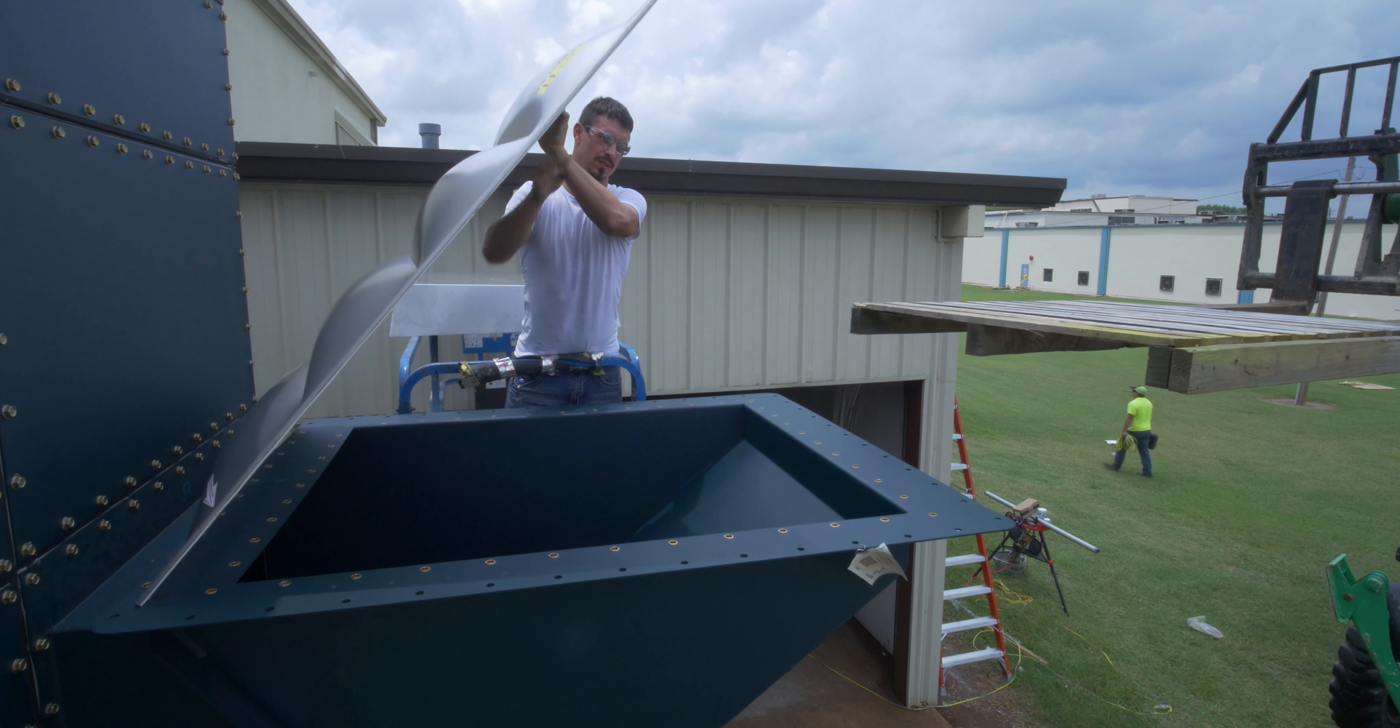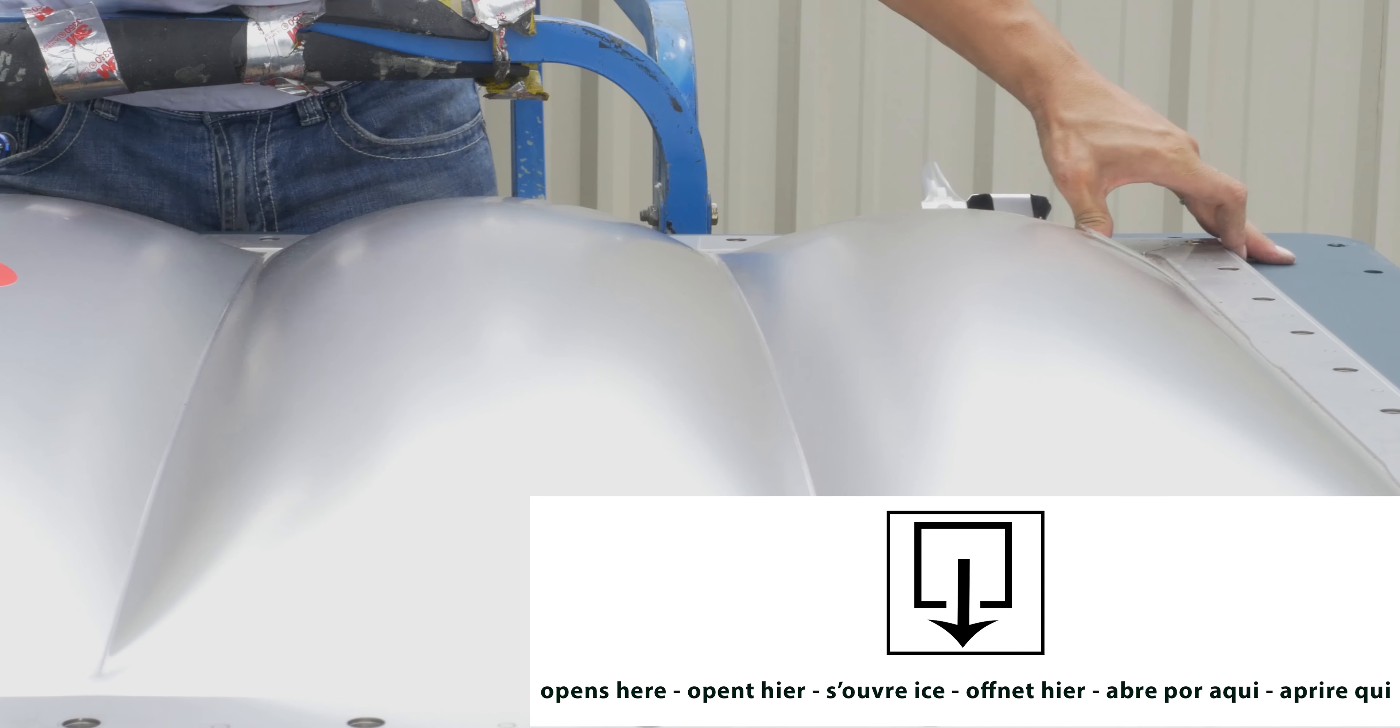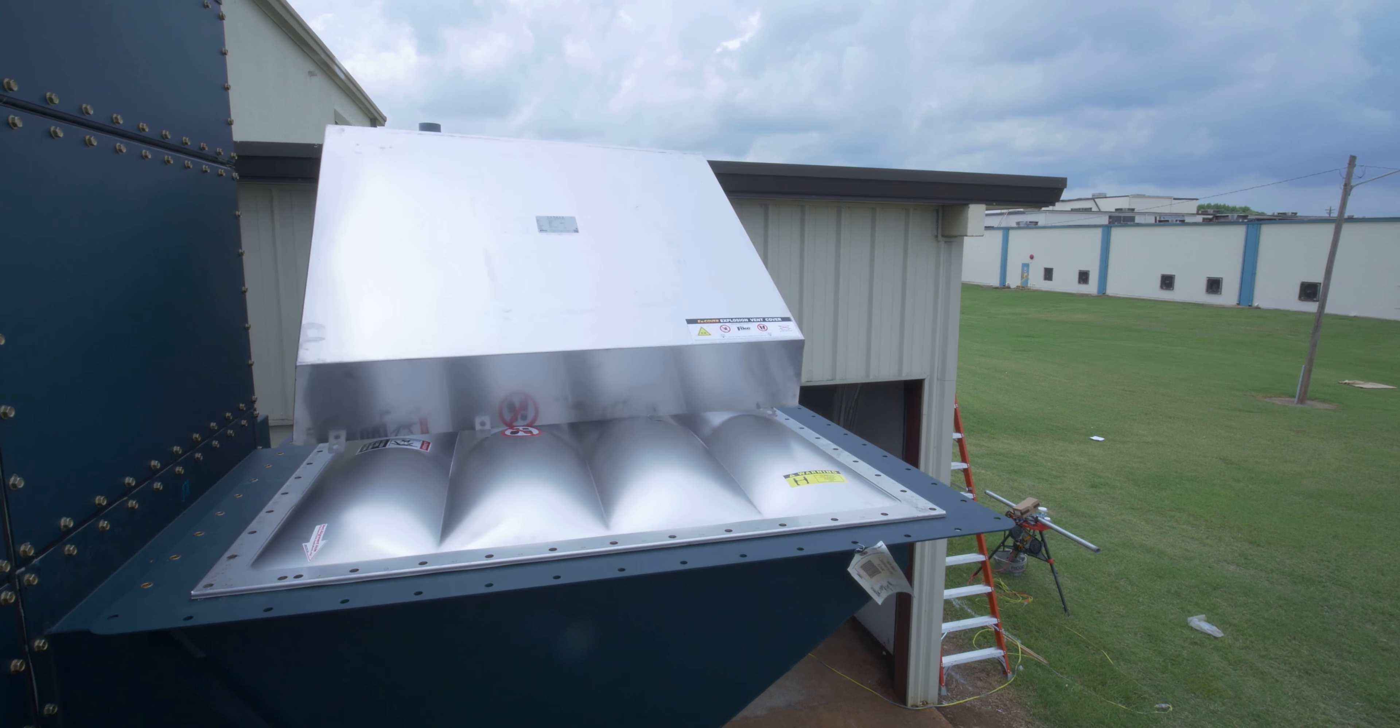For proper orientation, reference the label located on the X-VENT notating the opening side. Now, lift and place the X-Cover on top of the X-VENT.